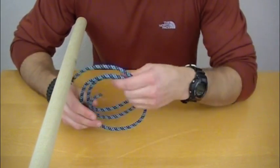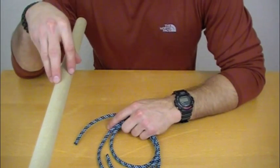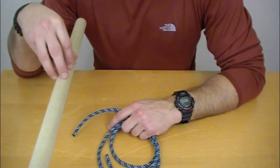It's tied by tightening the lashing around an anchor point, which we have this pole here today to simulate our anchor point.